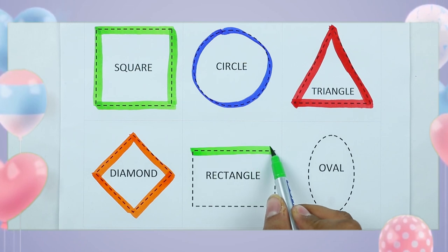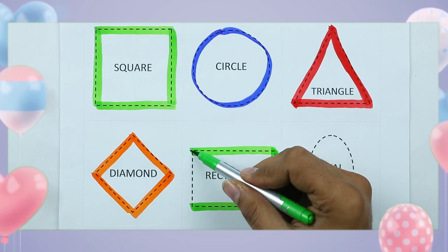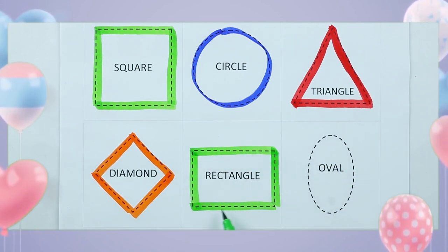One sleeping line, two sleeping lines, one standing line, one standing line. It's a rectangle with green color.